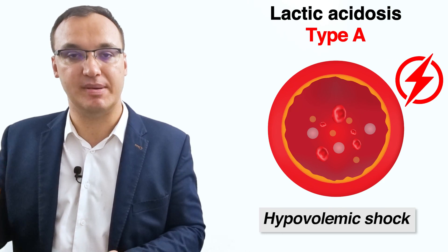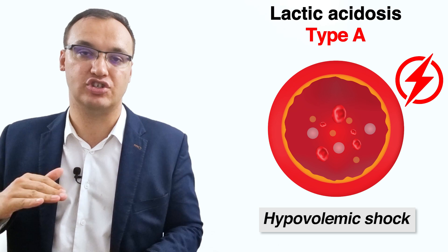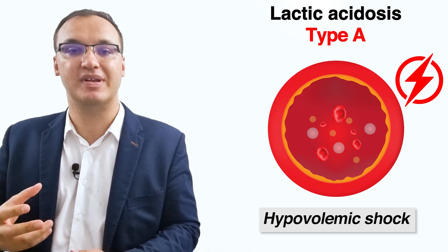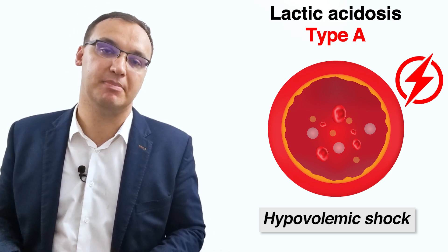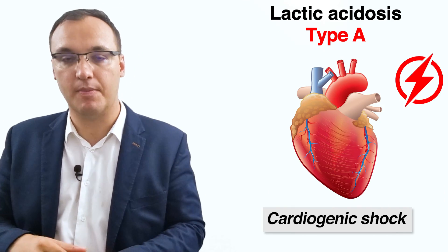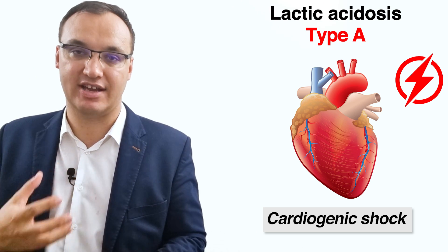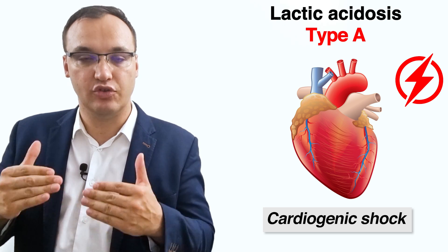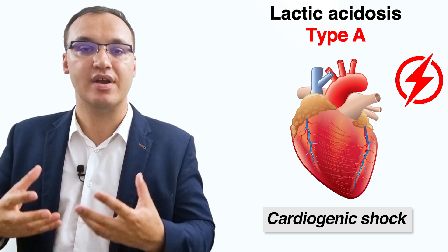In hypovolemic shock, the low blood volume results in below-average levels of blood entering the heart with every heartbeat, and therefore less than usual blood is pumped out to the body and its cells. In contrast, cardiogenic shock is due to the inadequate pumping action of the heart, also causing lower than normal levels of blood pumped out with every heartbeat.